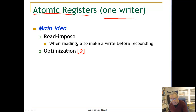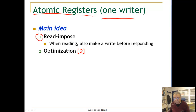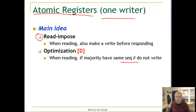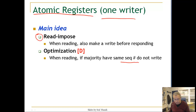For the single writer case, the main idea is the reading pause — when reading, also make a write before responding. One possible optimization is that if you read and all the values you got from a majority of nodes have the same sequence number, then the write has already completed and you don't need to do the read-and-impose operation.